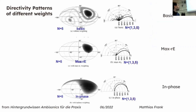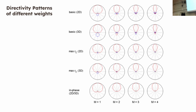Looking at pictures: basic weighting on the left — even in fifth order you can see the side lobes clearly. Max RE has the side lobes super quiet and the main lobe only a little bit broader. In-phase is quite broad but with no side lobes. Side lobes are not related to the order — they depend on the weighting. You could also think about using in-phase intentionally for a more blurry image.